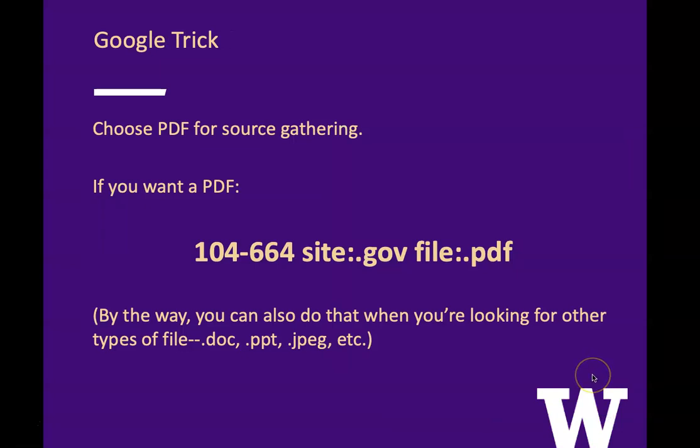Here's a Google trick. If you know that you want a PDF, you can include file:.pdf in your search. So in my sample search here, I'm looking for the report number on a government site in PDF format. By the way, you can also do that when you're looking for other types of files, like Word documents, PowerPoints, JPEGs, or Excel spreadsheets.